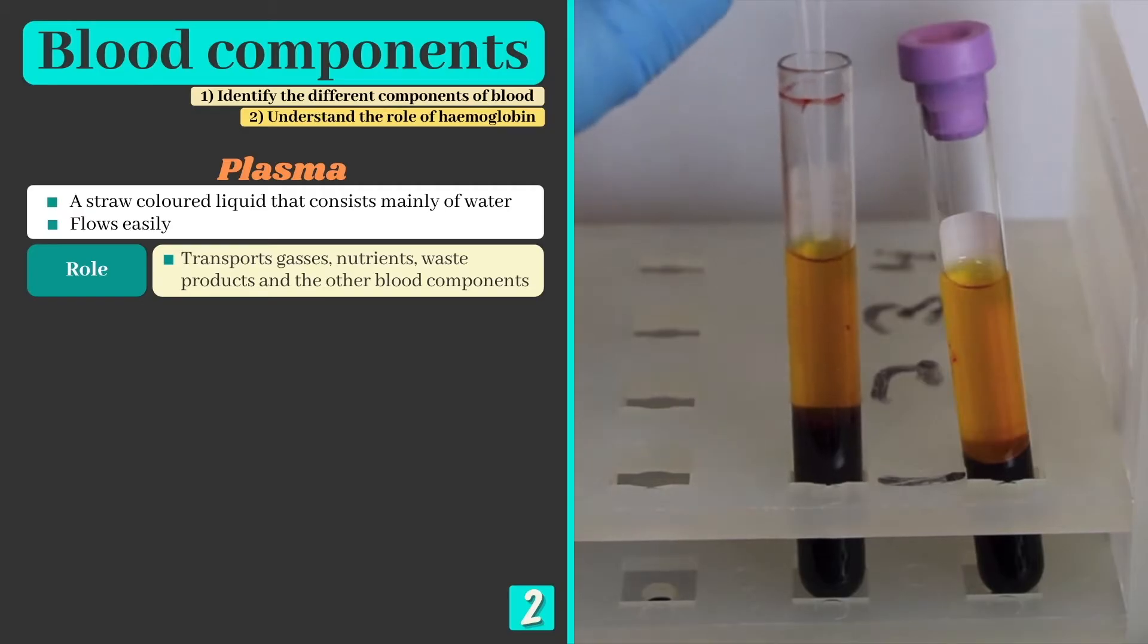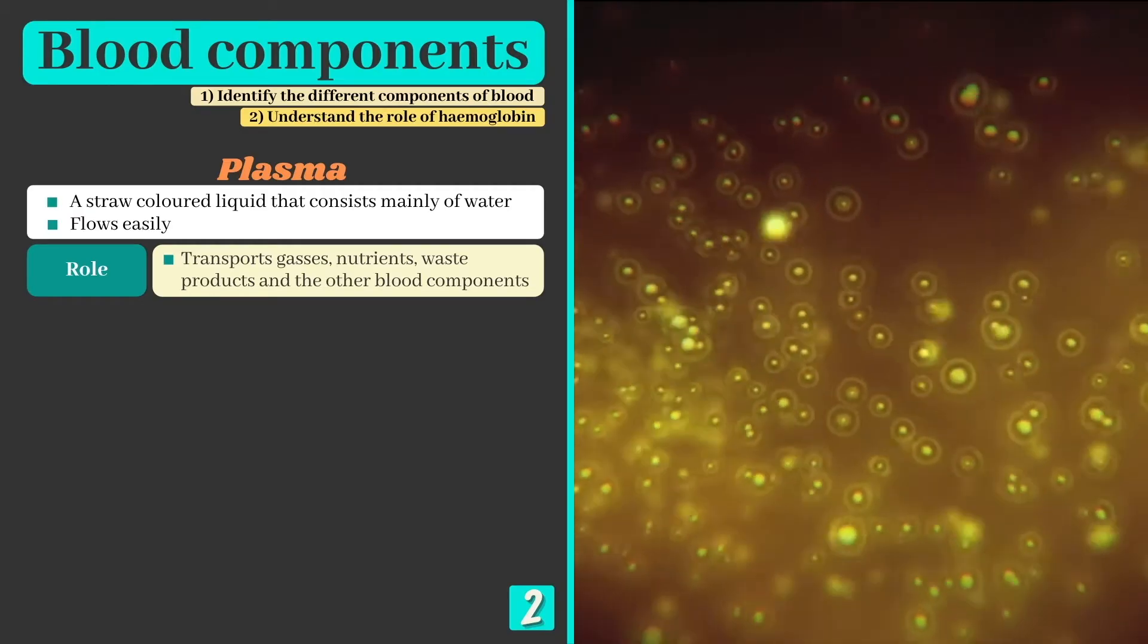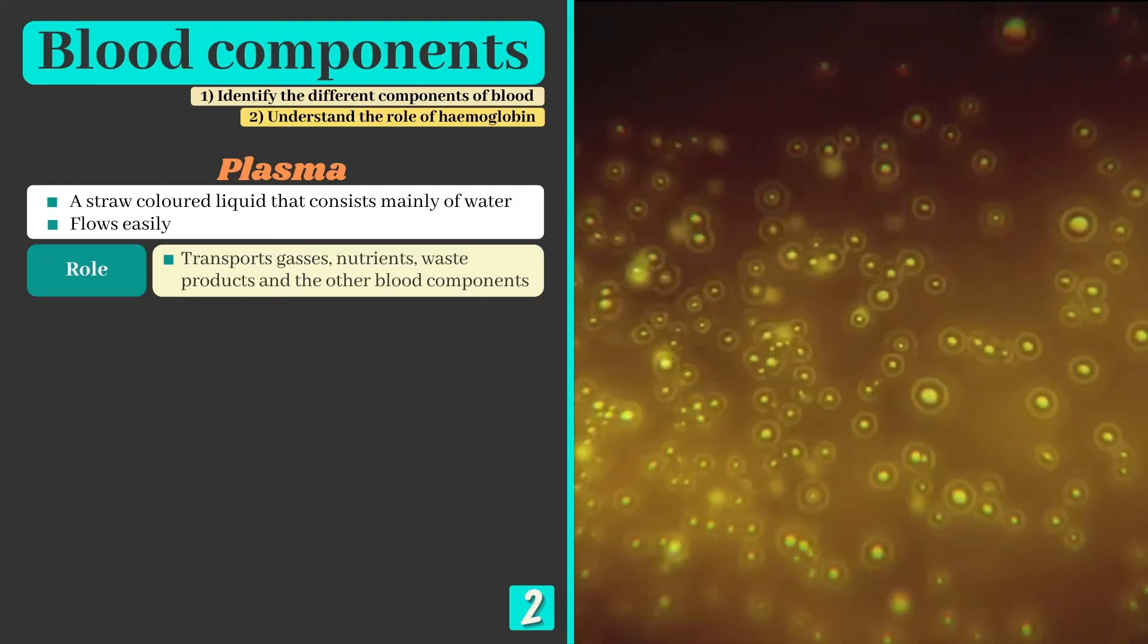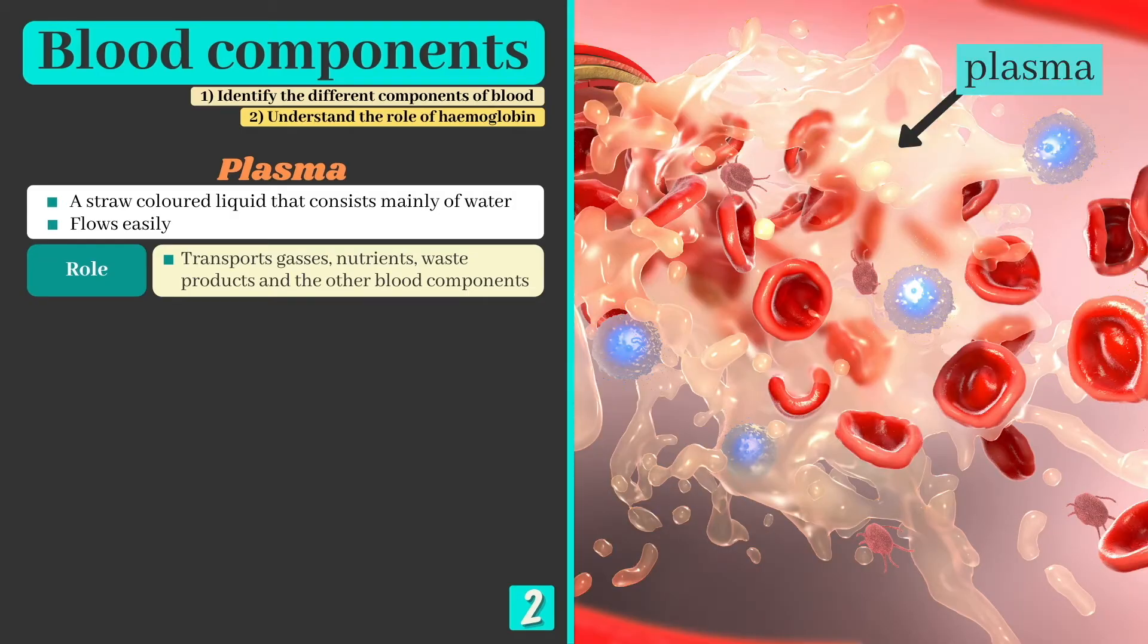We'll start with the plasma, which is a straw-colored liquid that consists mainly of water. Because it flows easily, the main function of the plasma is to transport gases, nutrients, waste products, and the other components of the blood to where they are needed.